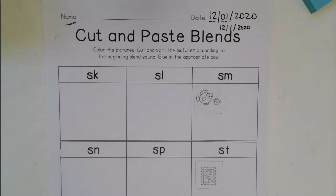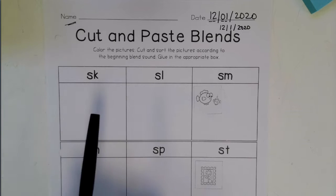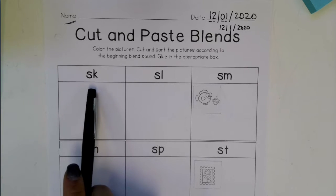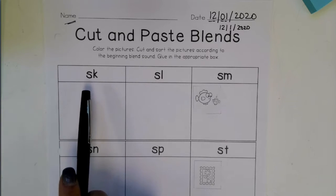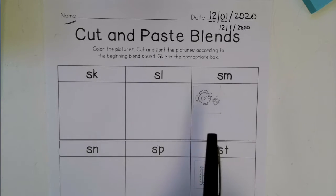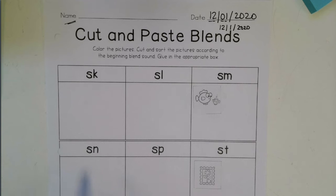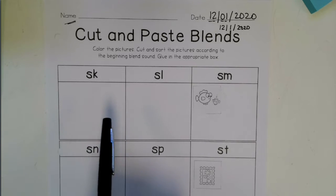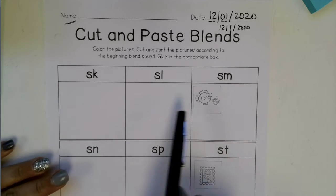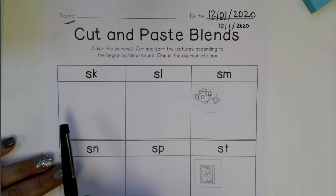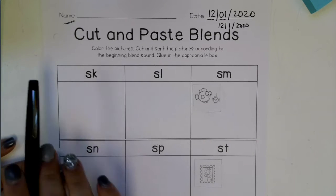Today for your cut and paste blend you're going to be cutting and coloring all of your pictures out. After you color them and you cut them out you're going to sort them according to their beginning blend sounds.